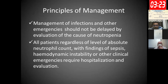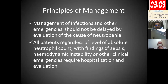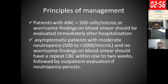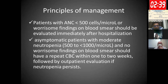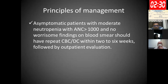The principles of management: treatment of infections and other emergencies should not be delayed by evaluation of the neutropenia cause — management should start first. All patients with sepsis, hemodynamic instability, or clinical emergencies require hospitalization. Patients with ANC less than 500 should be evaluated immediately after hospitalization. Asymptomatic patients with ANC 500–1,000 should repeat CBC within one to two weeks. Asymptomatic patients with ANC greater than 1,000 should have repeat CBC within two to six weeks, followed by outpatient evaluation.